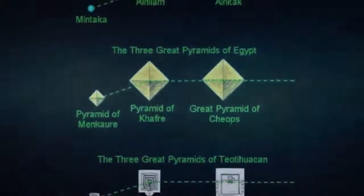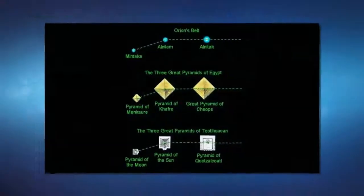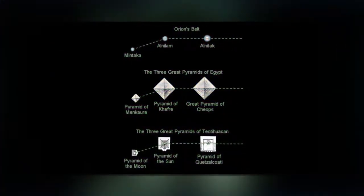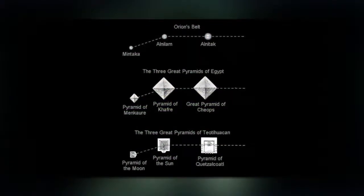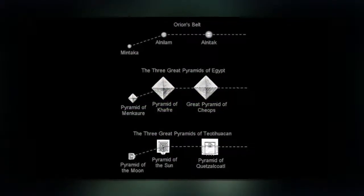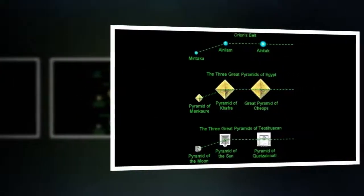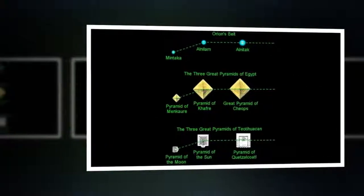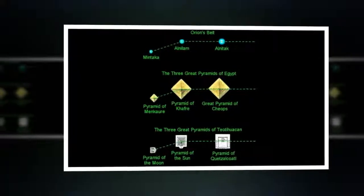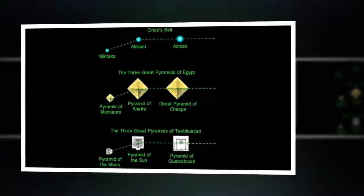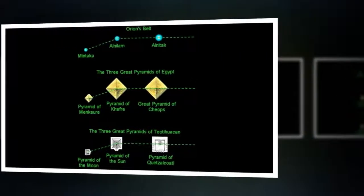The only existing reference to Teotihuacan before it was named by Nahuatl speaking Aztecs is believed to have been found in hieroglyphic texts from the Maya region as Puh, or Place of Reeds. This term Teotihuacan has been translated to either Birthplace of the Gods, or Place where Gods were born. This translation accurately reflects the Nahua creation myths which are said to have occurred precisely at Teotihuacan.